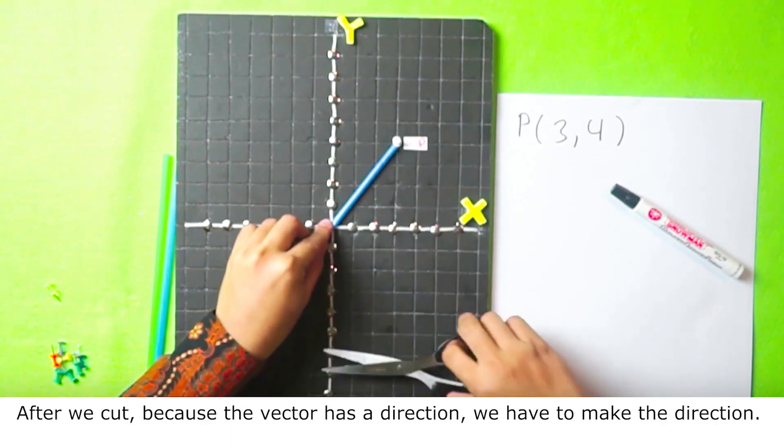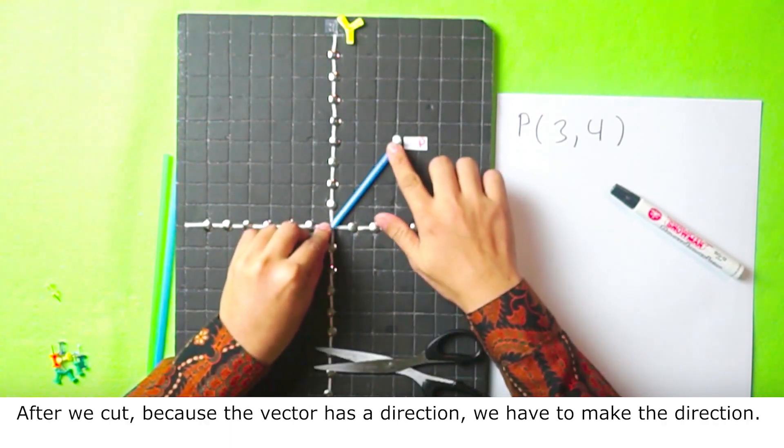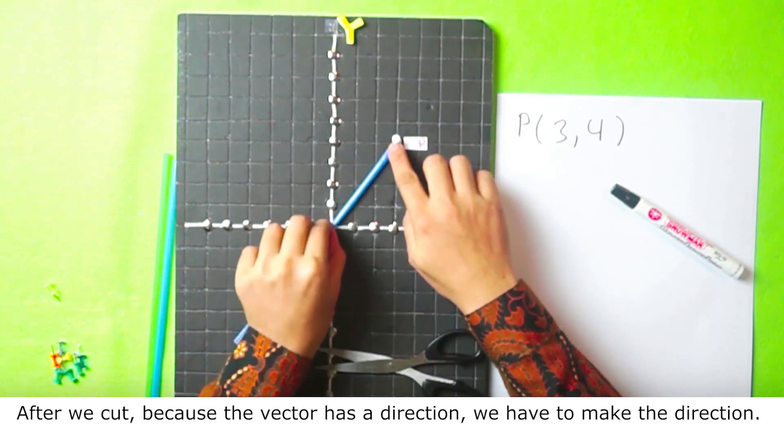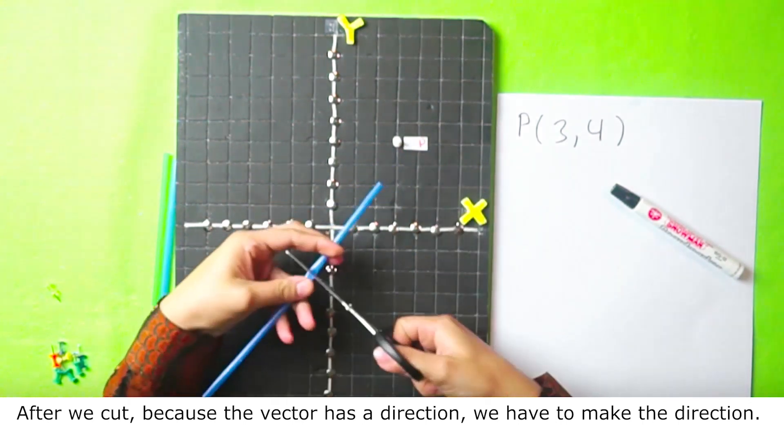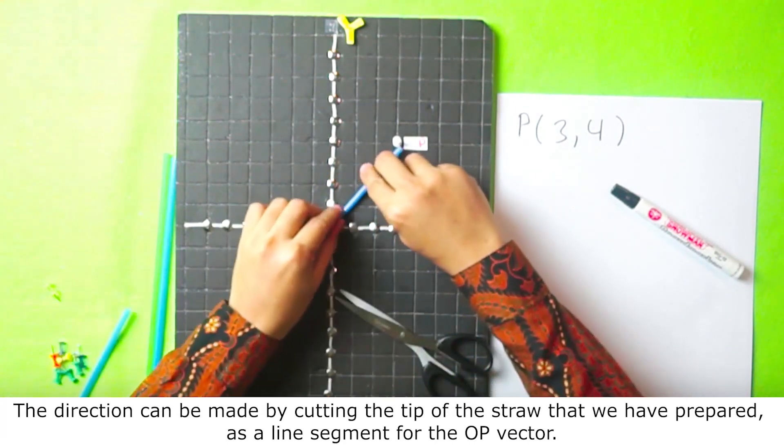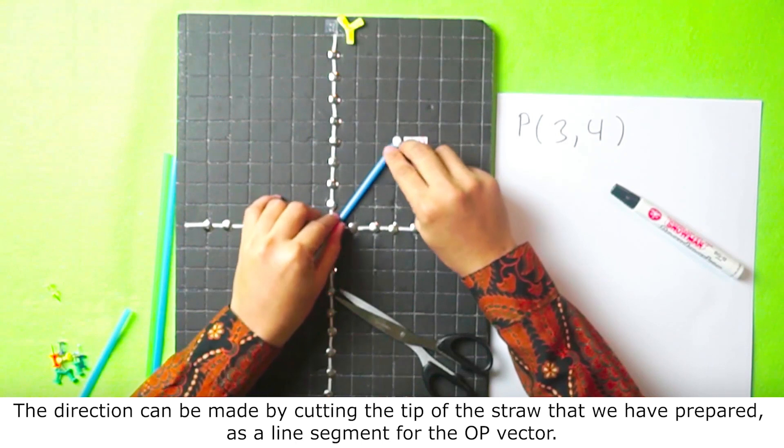After we cut, because the vector has a direction, we have to make the direction. The direction can be made by cutting the tip of the straw that we have prepared as a line segment for the OP vector.